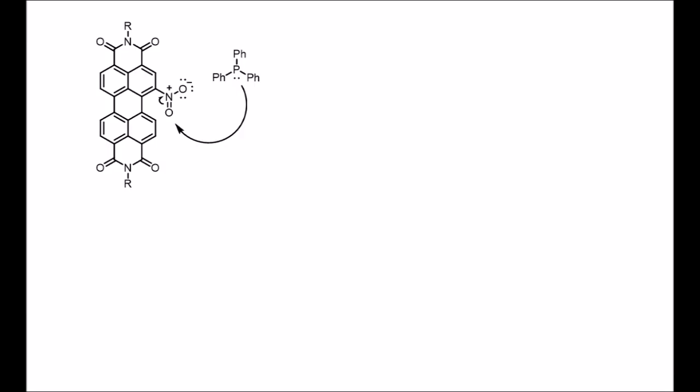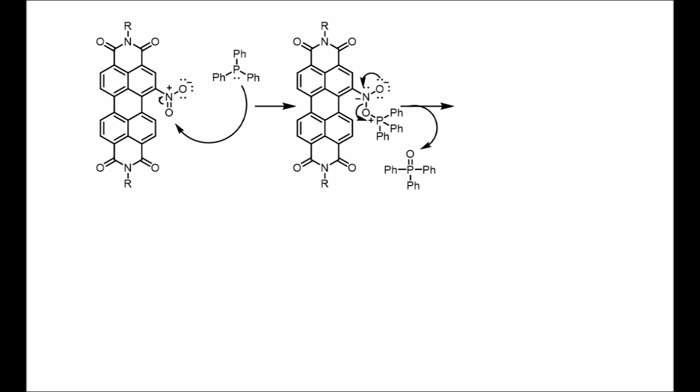In this reaction, the nitro group is reduced by two equivalents of triphenylphosphine, and two equivalents of triphenylphosphine oxide is produced as a side product. First, the triphenylphosphine attacks the oxygen on the nitro group. The oxidized triphenylphosphine is kicked off by the other NO double bond reforming.